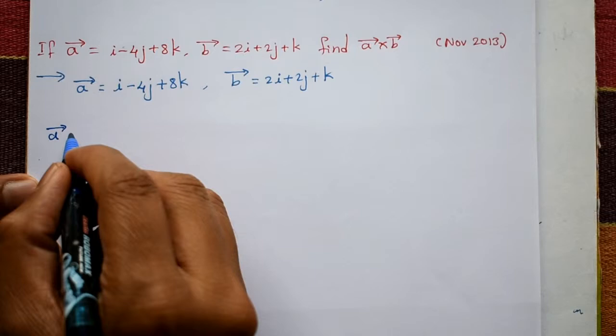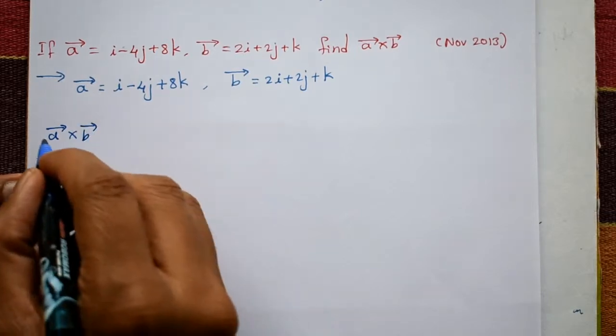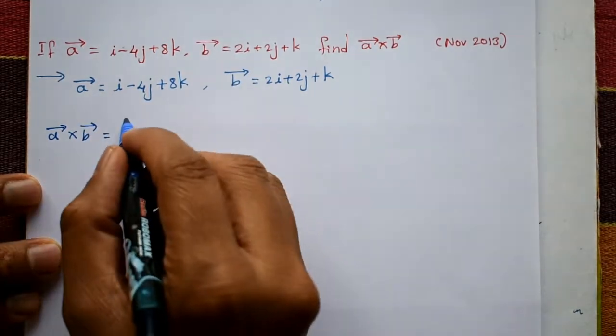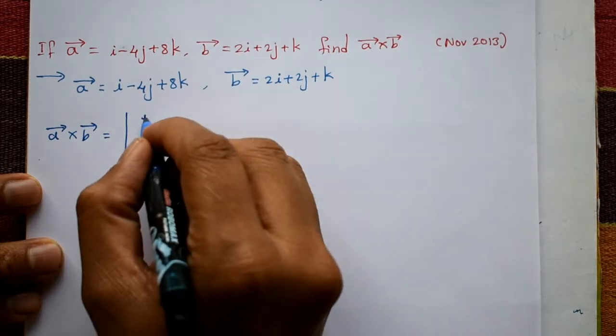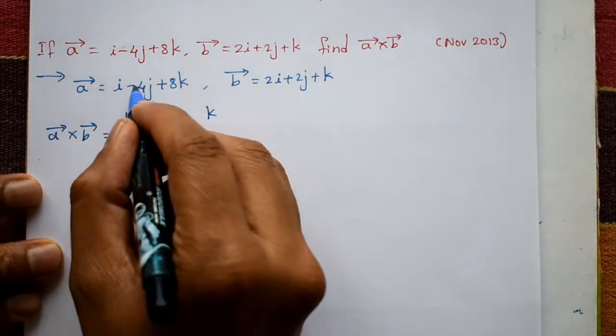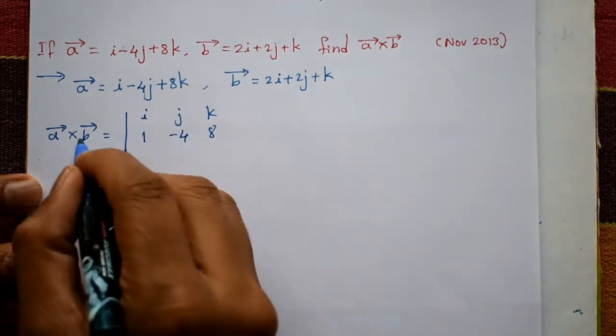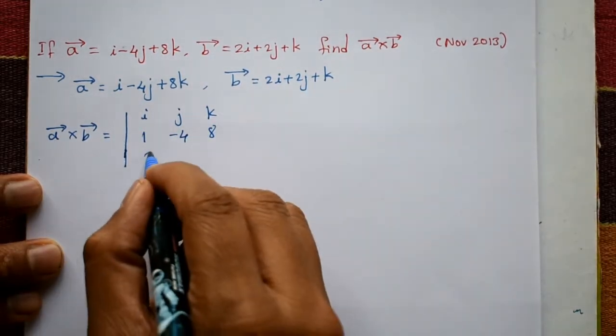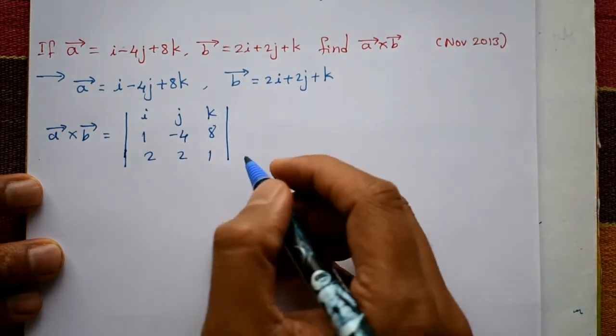Vector a cross vector b is the determinant of i j k. First is vector a: 1 minus 4, 8. Next b is 2, 2, 1. Okay.